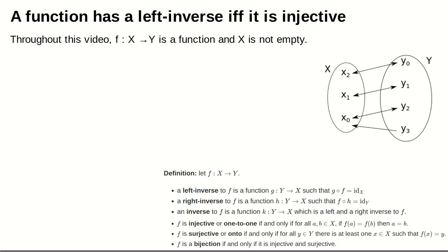We're now going to connect those two properties. Specifically we're going to prove a number of theorems which tell us precisely when a function has left or right or two-sided inverses according to whether it has the various properties of injectivity, surjectivity or bijectivity. f will be a function from a set X to a set Y, and X will be a non-empty set.